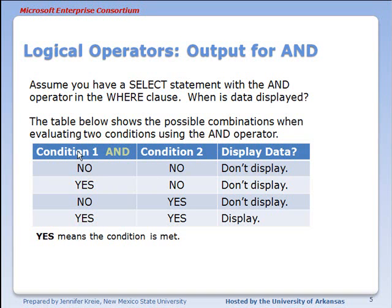If the next row of data evaluates to yes — that employee is in the marketing department — but no, they weren't hired before 2005, you still don't display the data. If condition 1 evaluates to no because the employee is not in the marketing department, but the employee was hired before 2005, you still don't display the data. Finally, if the employee is in the marketing department and was hired before 2005, you display the data. With an AND operator, you won't display the data unless both conditions are met.